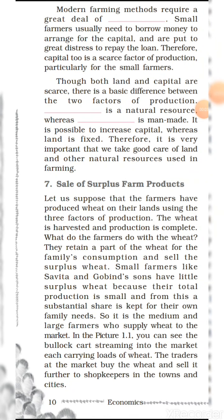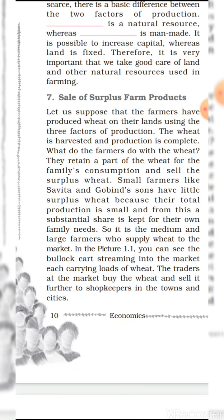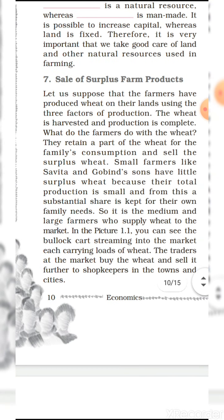The point is: sale of surplus farm products. Let us suppose that farmers have produced wheat on their lands using the three factors of production. The wheat is harvested and production is completed. Farmers retain a part of the wheat for family consumption and sell the surplus wheat. Small farmers like Sabith and Gobind have little surplus wheat because their total production is small and a substantial share is kept for their own family needs. It is the medium and large farmers who supply wheat to the market.